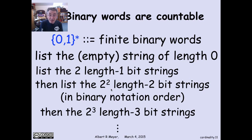And that listing is implicitly a description of a bijection from the non-negative integers, n, to the nth element in my listing. And that's a bijection. So the binary words are countable.